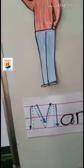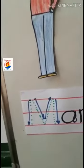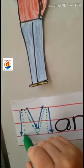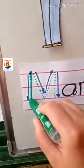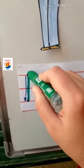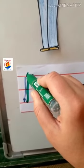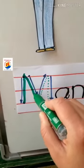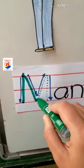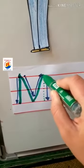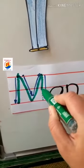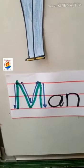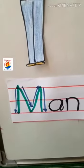Let's see how we write letter M. We need to line up. Line to the top, then back down. Line to the top, then back down. This is letter M. Ma, ma, M.